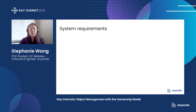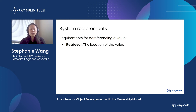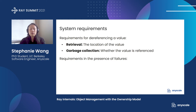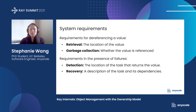To make this concrete, let's think about the requirements for dereferencing a value. At minimum, we need to know where a value is located and whether it's still referenced. Of course, failures complicate things. So we also need to be able to detect a failure, which means that we need to record the location of a task before it starts executing. That way, if a worker dies, we can determine if there were any pending tasks on that worker that need to be re-executed. Second, we need to record each object's lineage, or the tasks that we executed to create the object. Similar to existing systems, we can then re-execute this lineage upon a failure to recreate the object. And finally, Ray itself has to be fault-tolerant, meaning that all of this information must be able to survive failures.